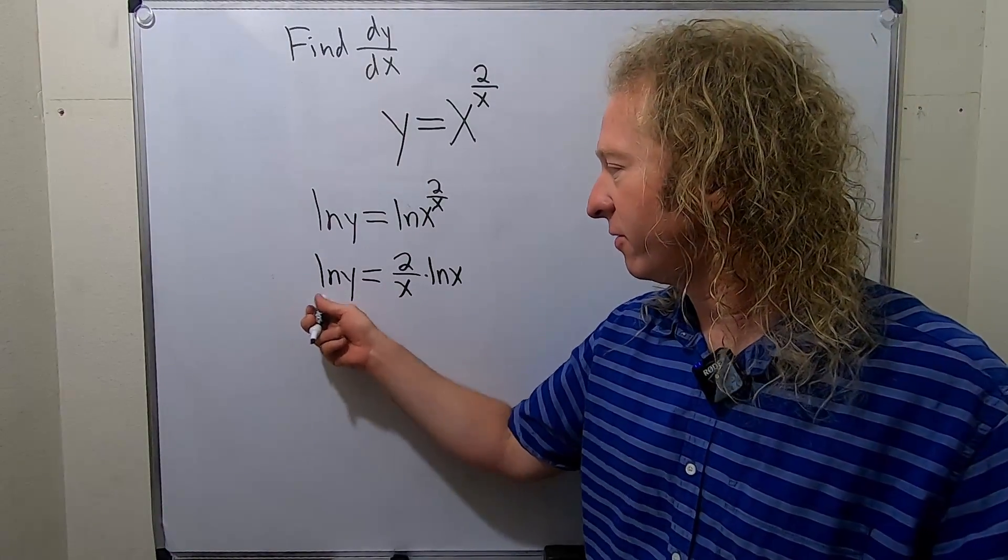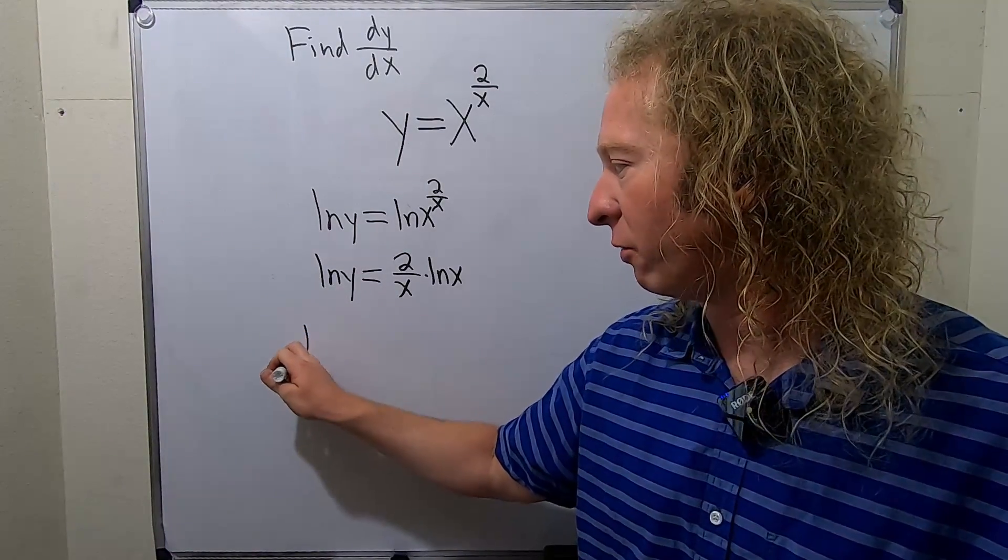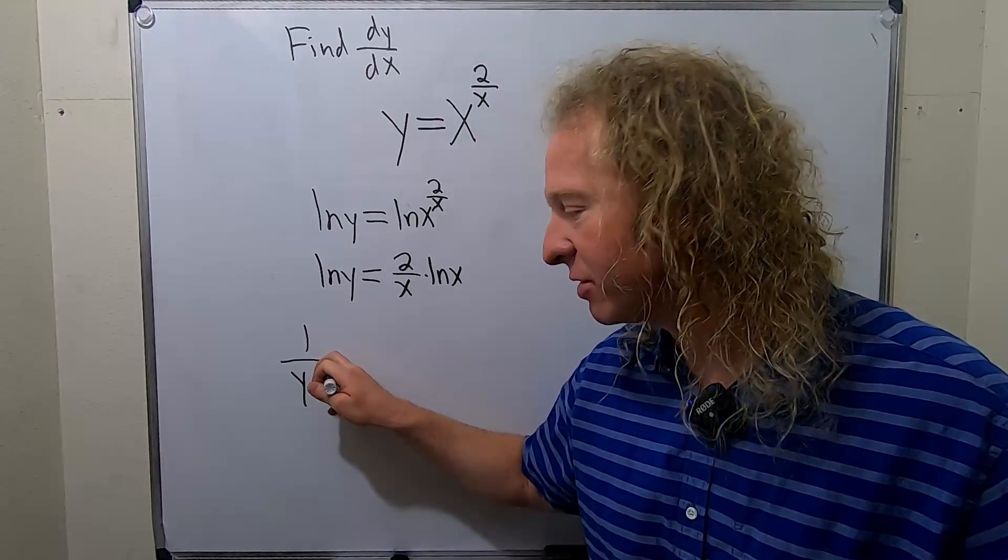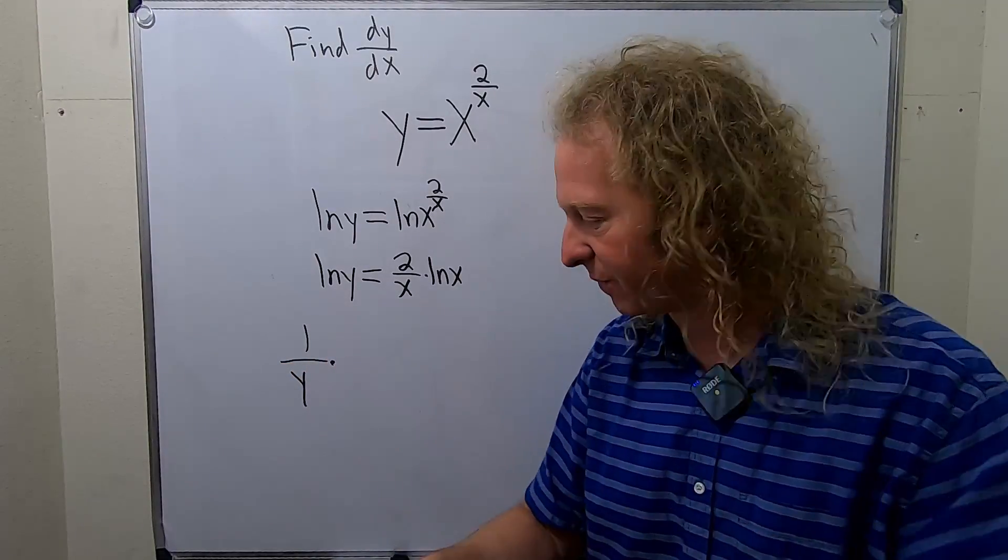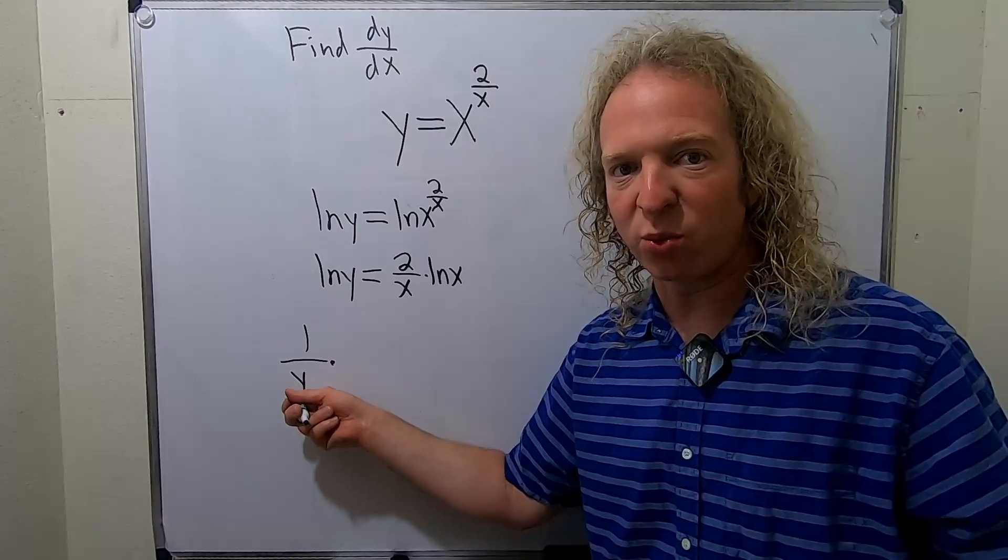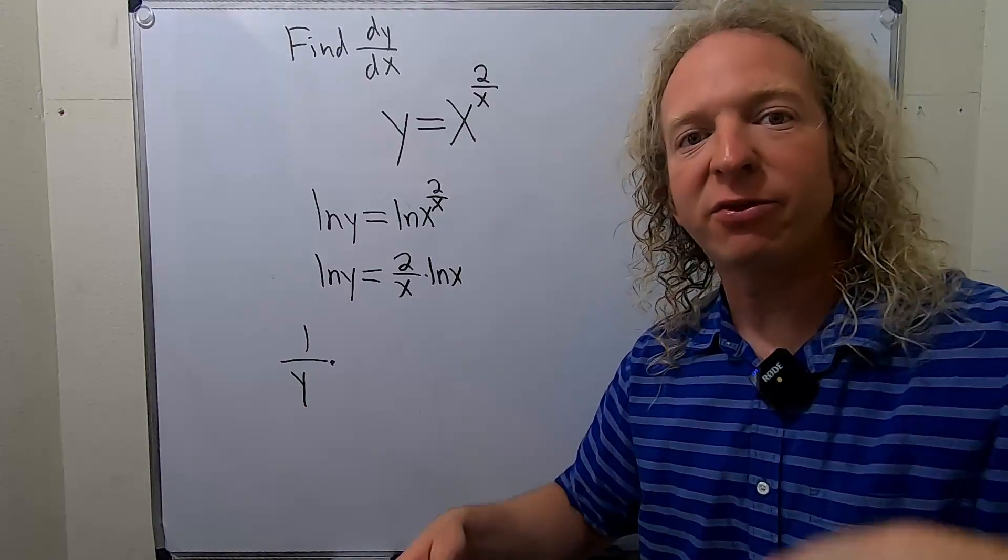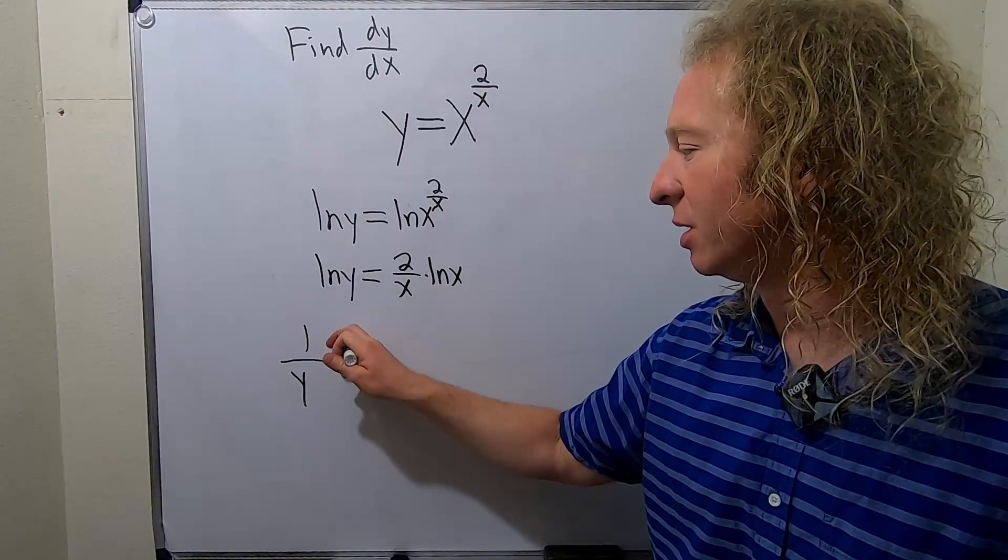So when we take the derivative of ln of y, it's 1 over y times the derivative of the inside function. So your inside function is y, so its derivative with respect to x is simply dy/dx.